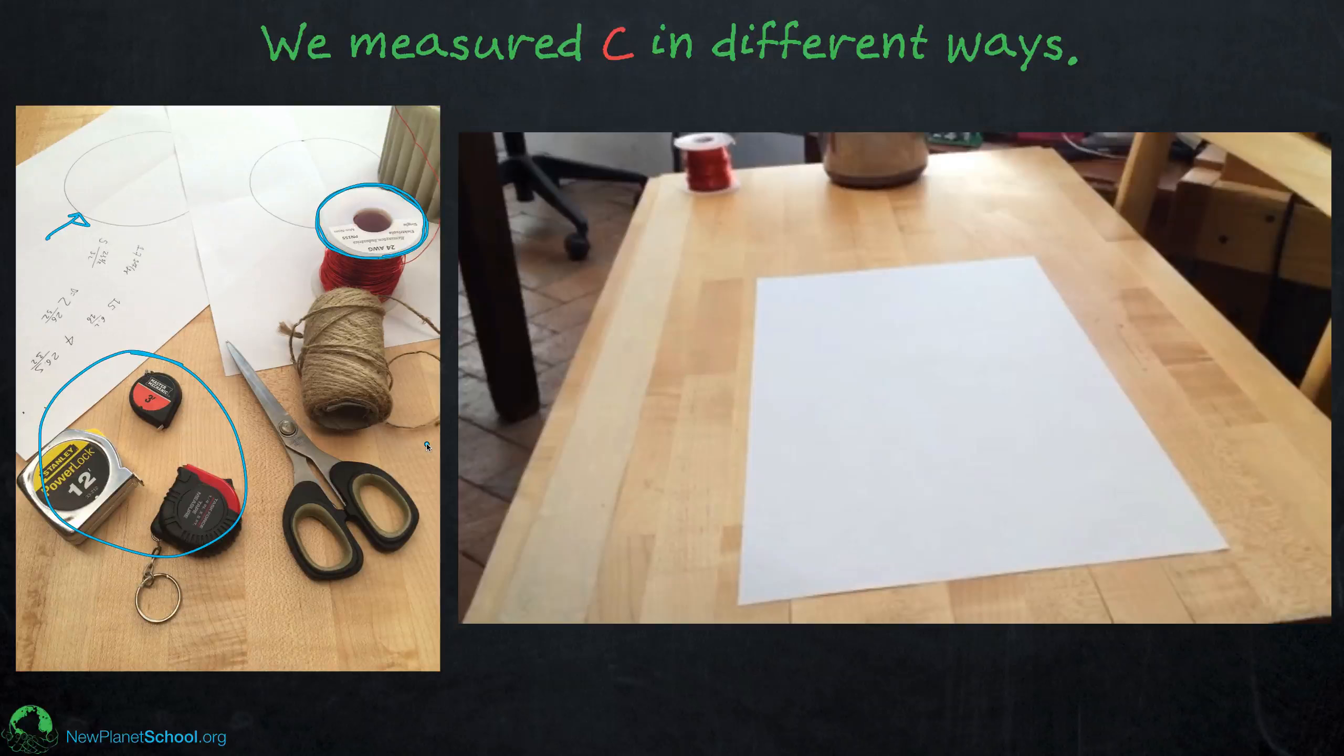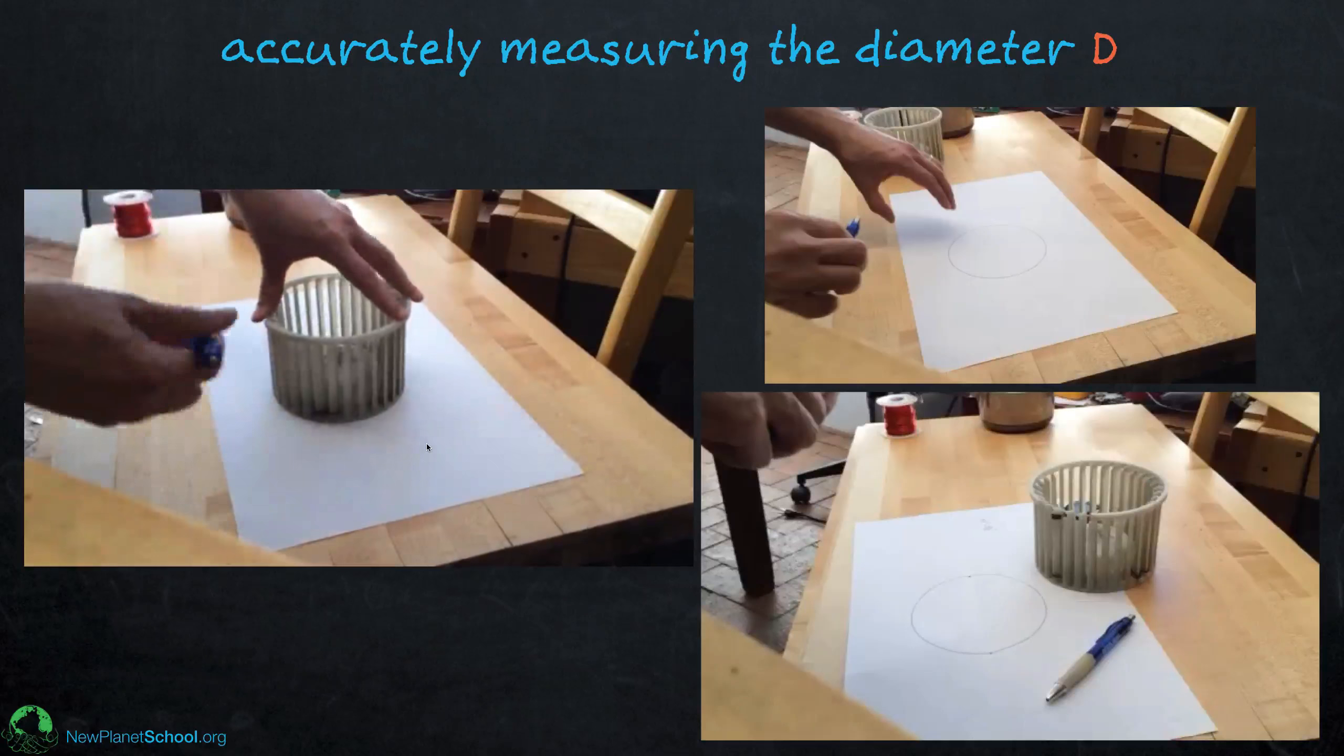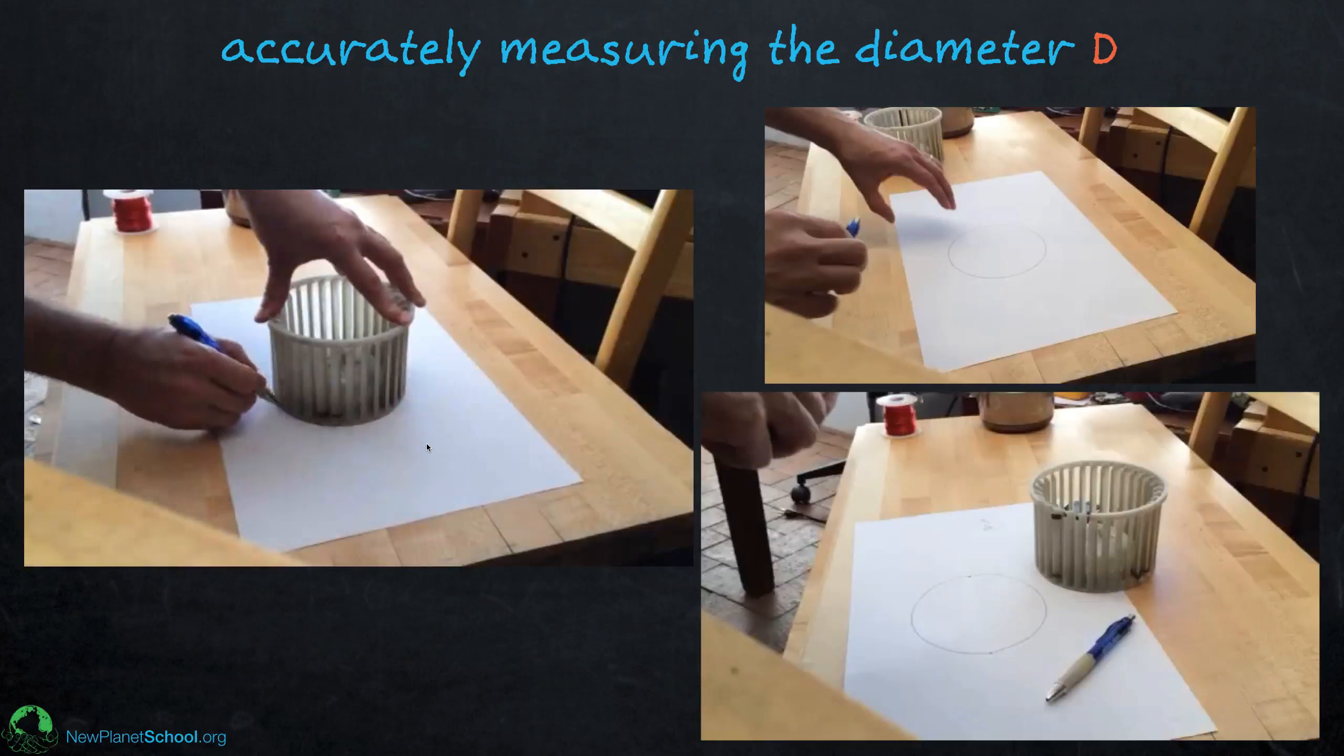Once you've done that for each of the objects, you can then do the diameter. And the diameter is pretty easy. You can just measure the distance across. But we wanted to do it fairly accurately. So what we did to make sure we were getting the longest distance across the circle is we would take the object, we would trace it on a piece of paper.